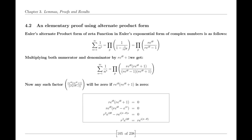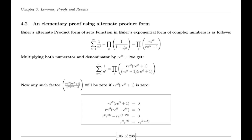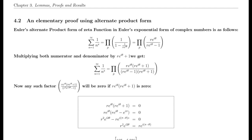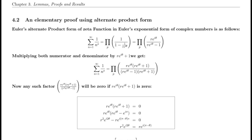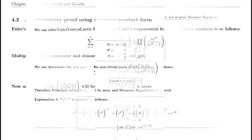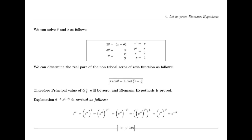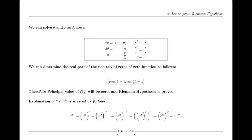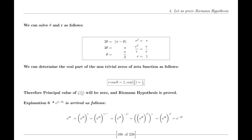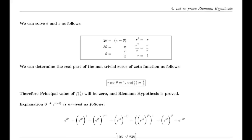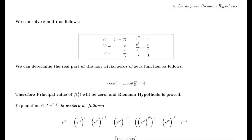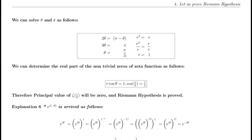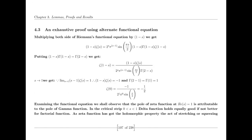When dealing with the Riemann zeta function and its simple pole at s = 1, the Laurent expansion helps us understand the behavior of the function near this point and its radius of convergence. The Laurent expansion of a function around a singular point, such as a pole, includes both positive and negative powers of the variable. For the Riemann zeta function near s = 1, the expansion includes a term that behaves like 1/(s−1), representing the pole, along with other terms that are regular and analytic at s = 1. The radius of convergence for this series is defined by the distance to the nearest singularity, meaning the series converges in a region around s = 1 but does not include s = 1 itself.